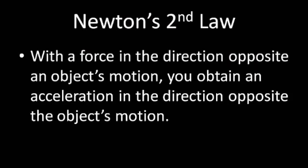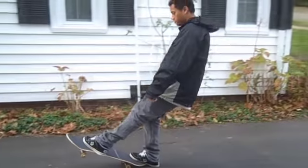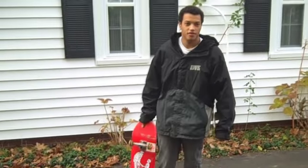Newton's second law also covers the concept of braking. If we apply a force in the direction opposite the object's motion, for example by dragging an end of the skateboard on the ground using friction, you obtain an acceleration in the direction opposite the object's motion. Therefore the object slows down until it comes to rest. Here we see Micah using friction to slow down his skateboard and give himself a negative acceleration.